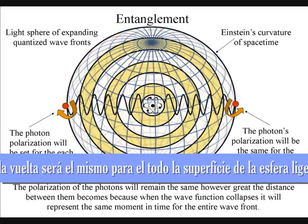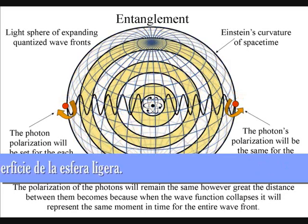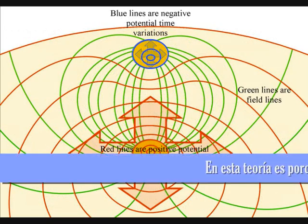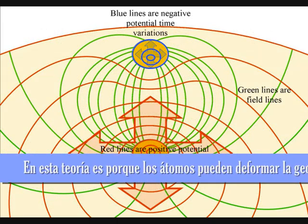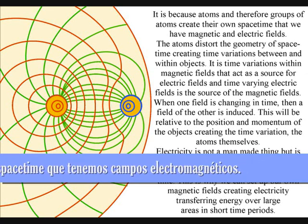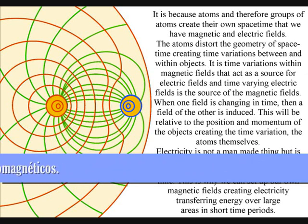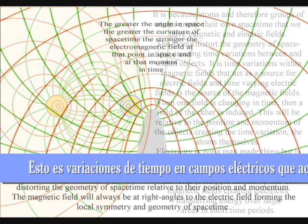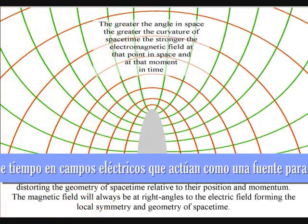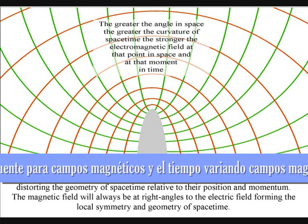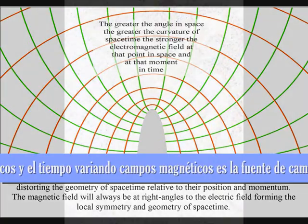In this theory it is because the atoms can distort the geometry of space and time that we have electromagnetic fields. It is time variations within magnetic fields that act as the source for electric fields, and time varying electric fields is a source of the magnetic fields. When one field is changing in time, then a field of the other is induced. This will be relative to the position and momentum of the objects creating the time variation, the atoms themselves.